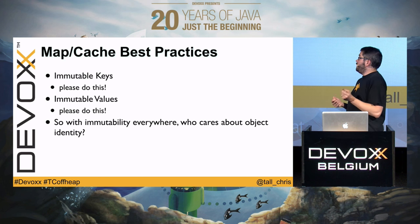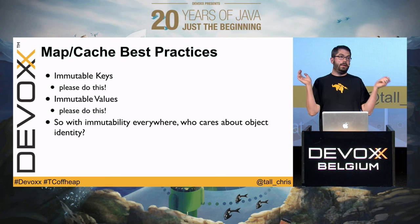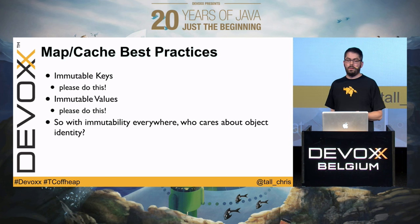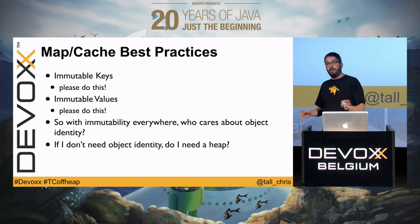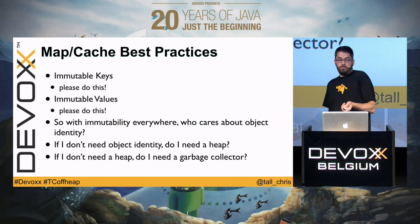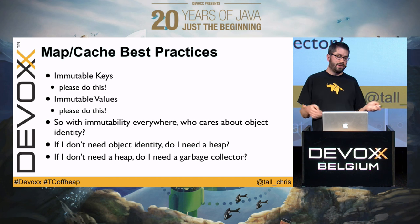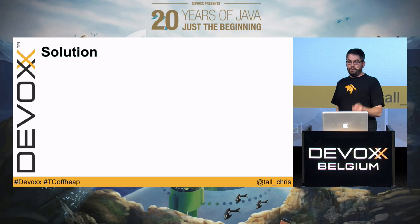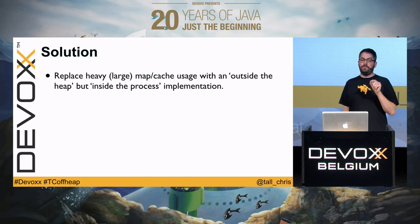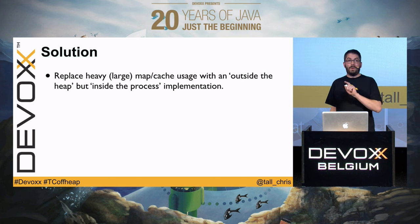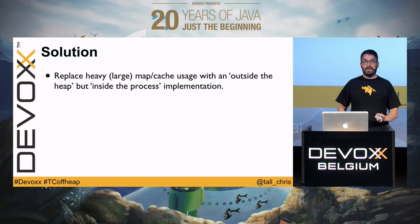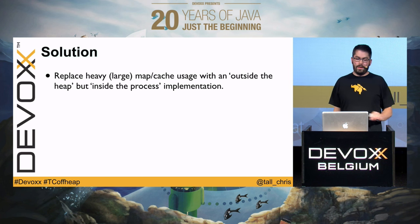But if we have immutability, who really cares about object identity? I can just copy the object freely — as long as the state's the same, you don't care. If there's no object identity, do I really need a heap? No heap means no garbage collector, no overhead. So the solution is obvious: replace all heavy, large map/cache usage with an outside-of-the-heap but inside-the-process implementation. Please don't do this with the small stuff — you're taking a hit. If it's too big to fit in the heap, move it; if not, leave it where it lies.